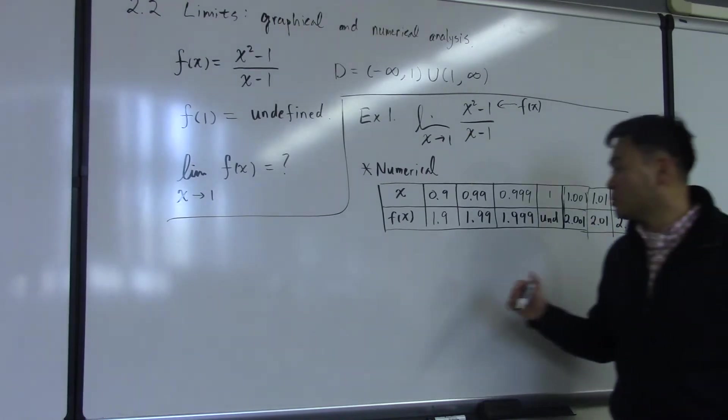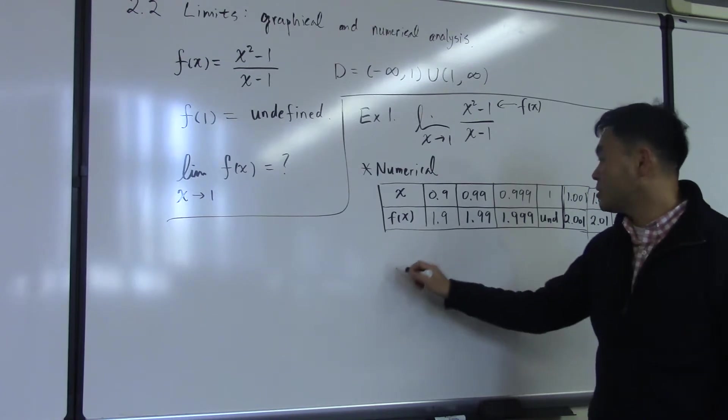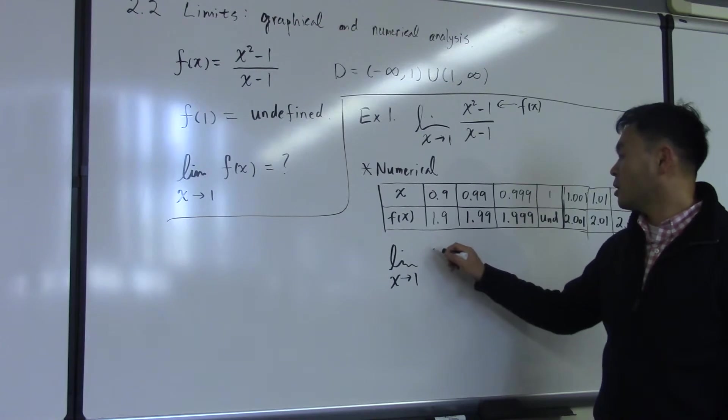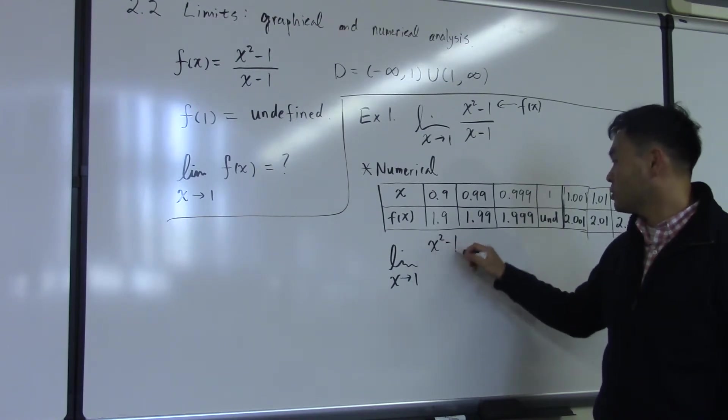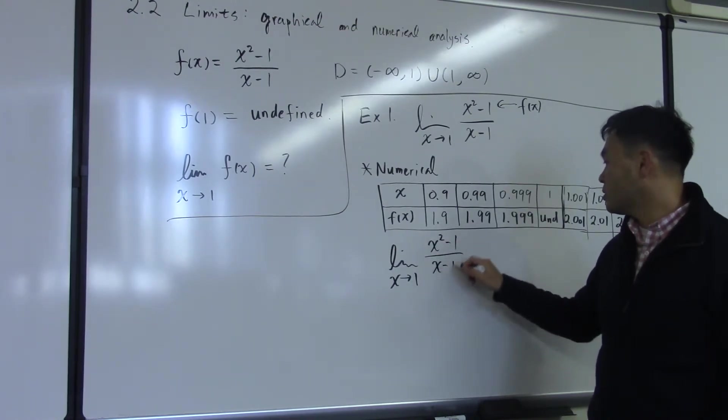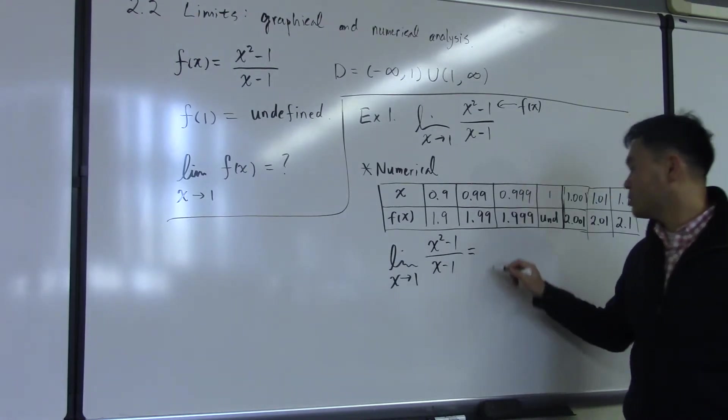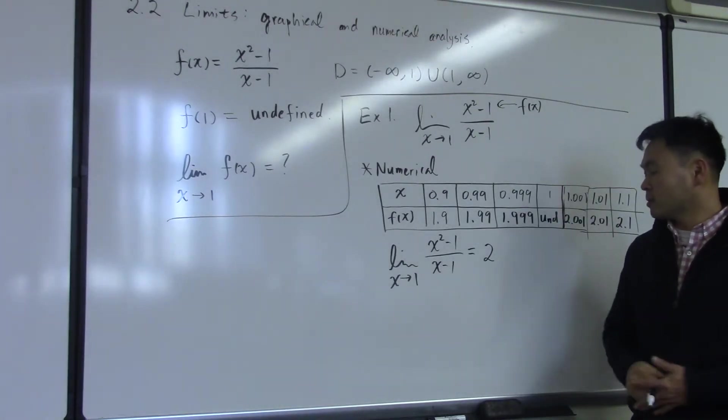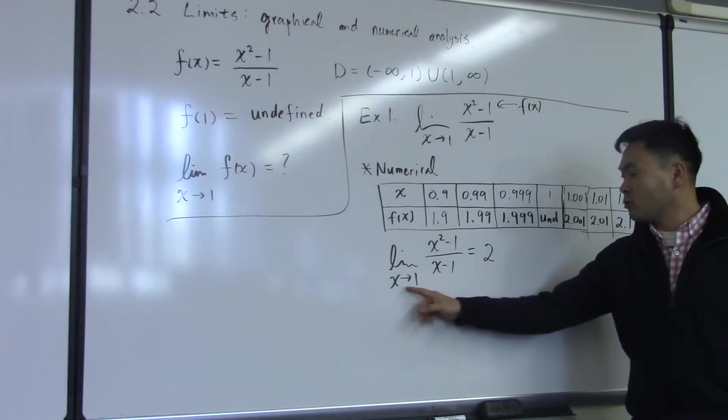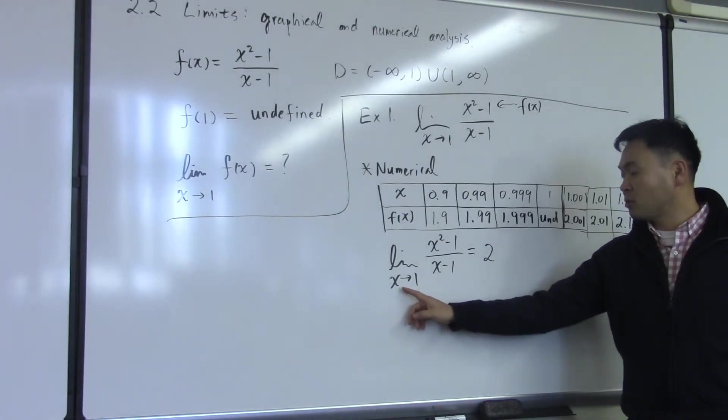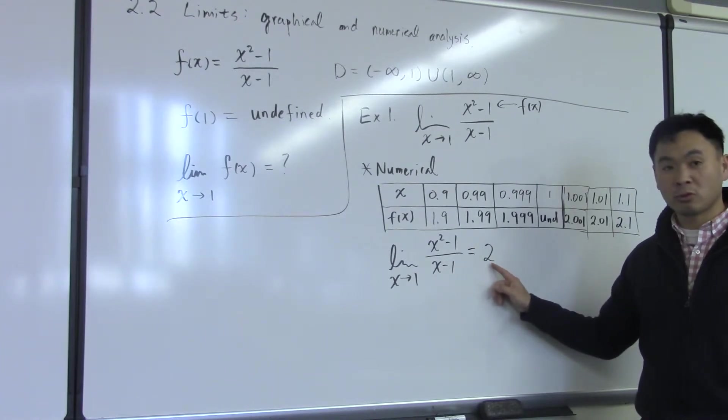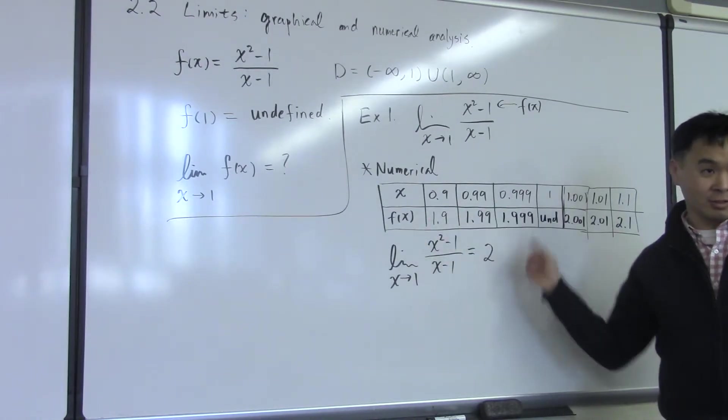And that's what I mean when I say that the limit of x going to 1 of x squared minus 1 over x minus 1 equals 2. So as you plug in x values that are very close to 1, the value of this function will get closer and closer to 2. That's what this symbol means.